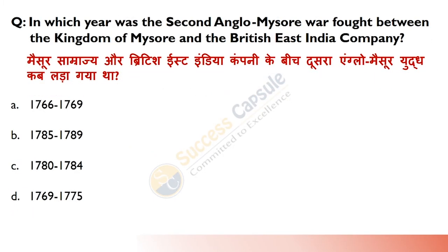The 2nd Anglo-Mysore War between the Kingdom of Mysore and British India Company — in which years was it fought? Answer is C — 1780–84. Marathas, Nizam and Hyder Ali were against the British. Hyder Ali died in 1782 during this war, and then his son Tipu Sultan continued and ended the war with the Treaty of Mangalore.